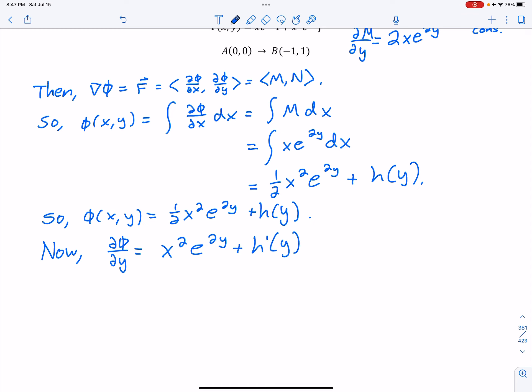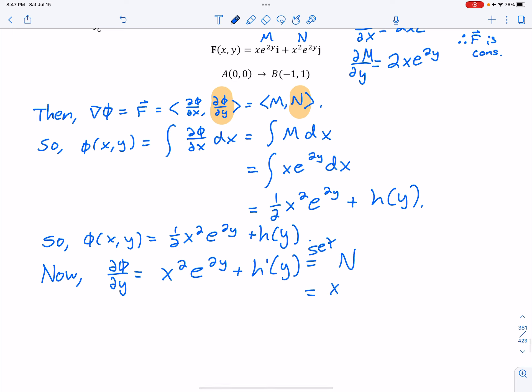If you'll remember, this phi with respect to Y is equal to N. So I'm going to set this equal to N. Our N, if I scroll up just a bit, is X squared, E to the 2Y. It's that convenient thing that seems to work out quite a bit for us.